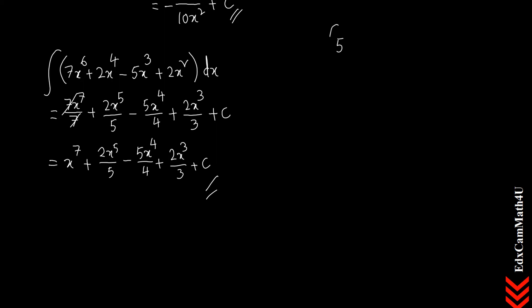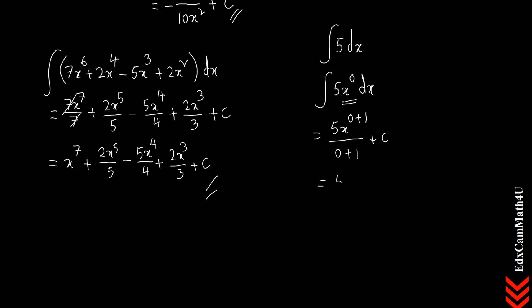If there is only a constant — say 5 — with no x expression, we can write it as 5 times x to the power 0, since anything to the power 0 equals 1. Applying integration gives 5 times x to the power 1 divided by 1 plus C, which simplifies to 5x plus C. So for any lone constant, just write the constant with x beside it plus C.